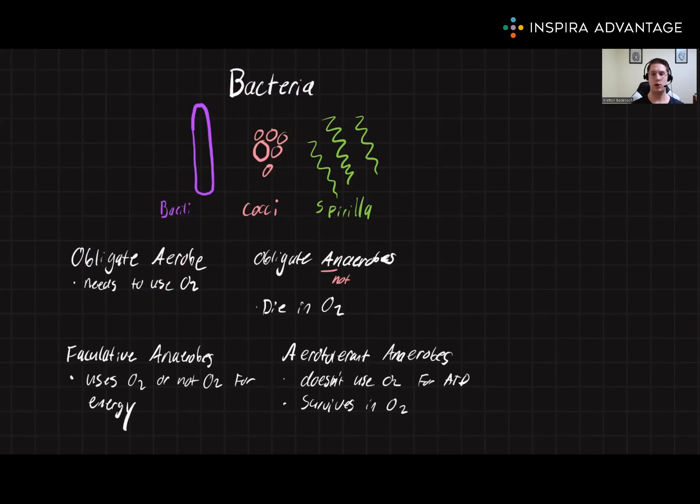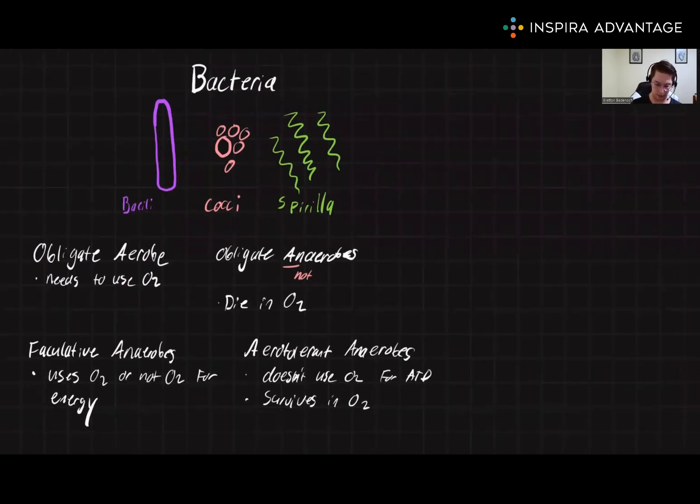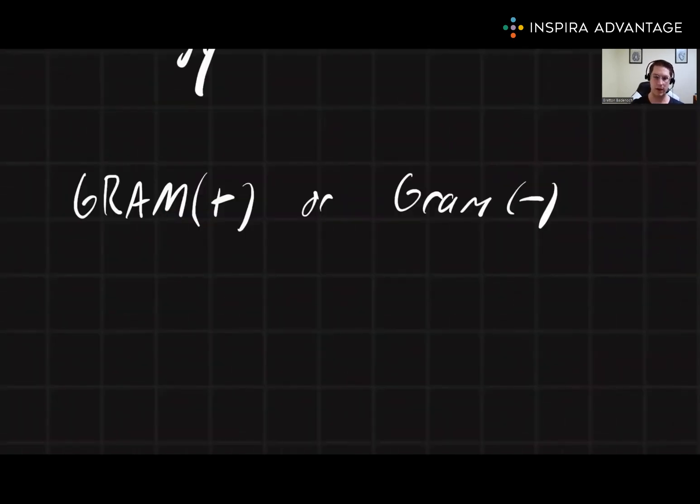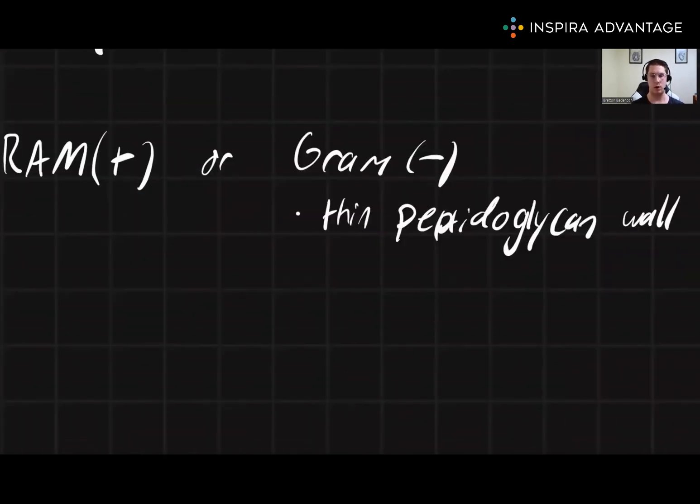There is one final way you need to know how to distinguish bacteria, and this is based on if they are gram positive or gram negative. Gram negative bacteria are going to have a thin peptidoglycan wall, as well as an additional outer membrane that prevents the stain from showing up as dark purple. This will make the gram negative bacteria appear pinkish red.